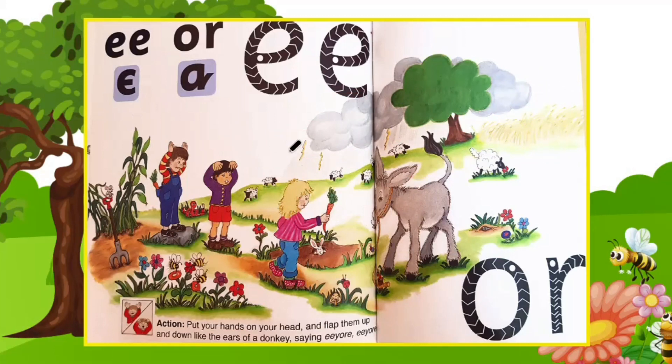Now who will tell me the hidden sound in this story? Yay, you are right. It is E-O, E-O, E-O, when the donkey waggles his ears up and down in greeting.